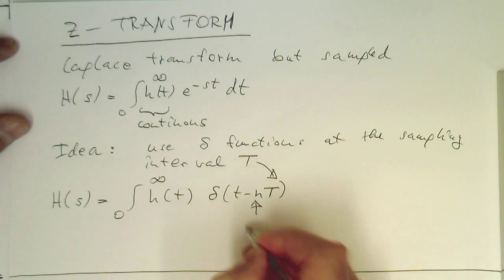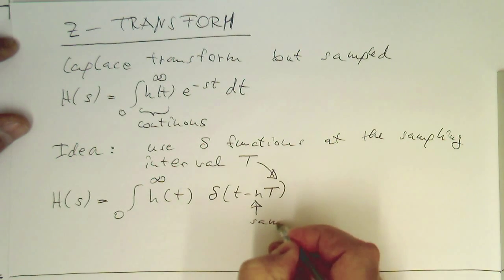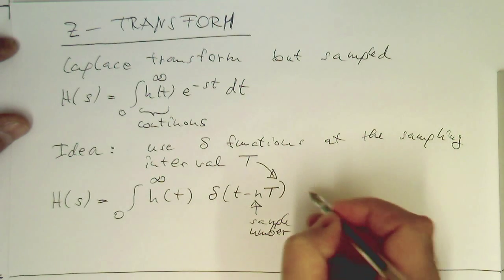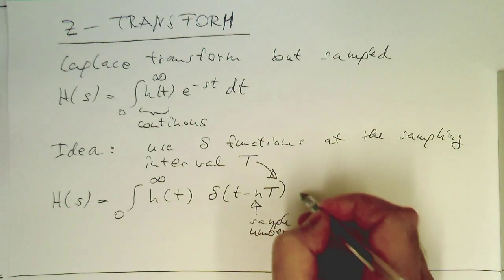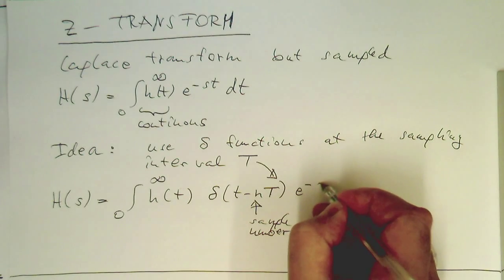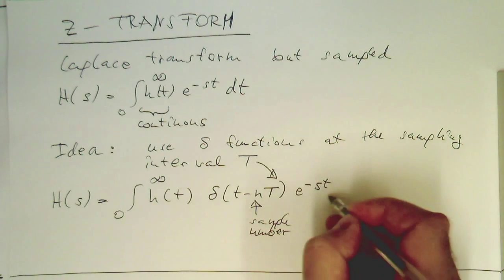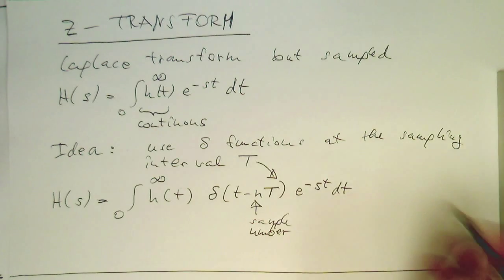And that's the sampling number, sample number. And then we need to multiply this with the e^(-st) dt.